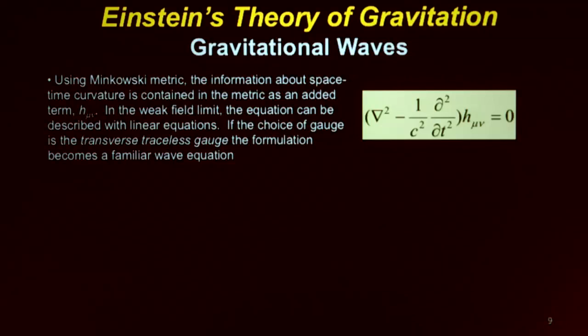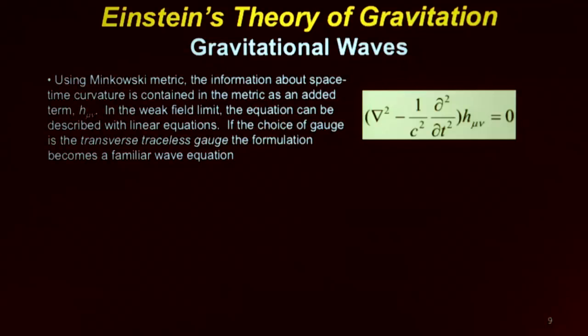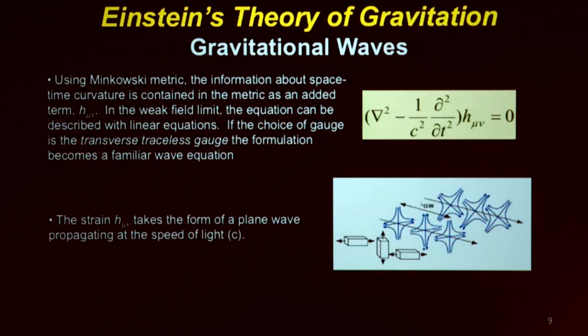If you write down general relativity in a way that makes it look similar to electromagnetism — picking a Minkowski metric and a particular gauge — you get an equation with a little h-mu-nu, which is called in general relativity the strain. That's exactly what we measure in the experiment — the strain, or amplitude of the gravitational wave. When we have something of this form, we get basically traveling plane waves, just like we learned in electromagnetism.